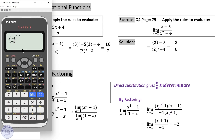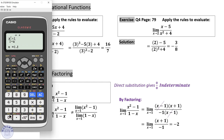You can always check your answer using numerical approximation — write the expression, press calculate, and approach 1 from the left side, such as 0.9999, then click equals. You can see it approaches negative 2. Also from the right side, try 1.00001 and it's approaching negative 2.